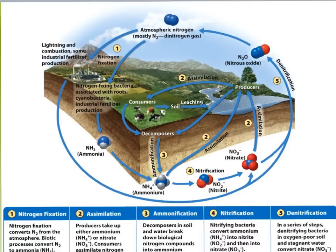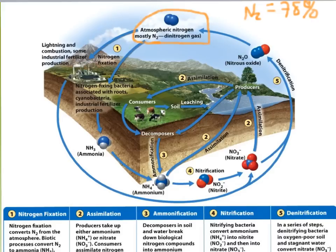Atmospheric nitrogen is in the form of N2, which is just two nitrogens bound together with a very strong bond. This atmospheric nitrogen is about 78 percent of our atmosphere, so every breath you take is mostly nitrogen. However, this form — atmospheric nitrogen — is not a usable form. We can't actually use N2 to build amino acids and proteins that we need in our bodies. About three percent of your body is nitrogen, but we don't get it from atmospheric nitrogen directly.